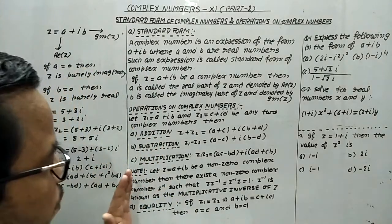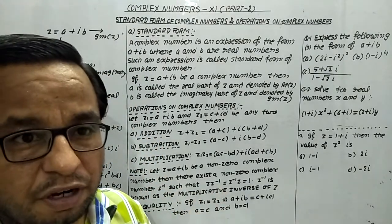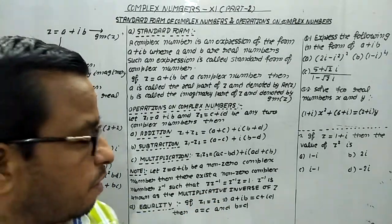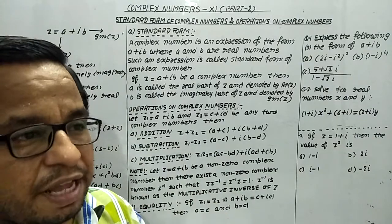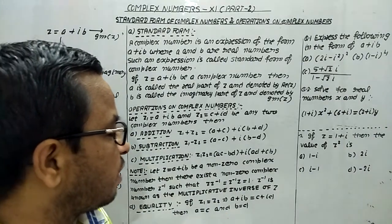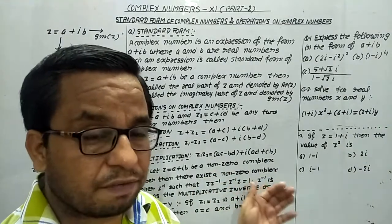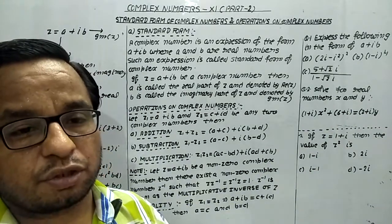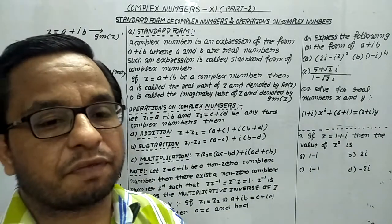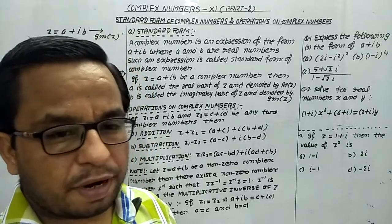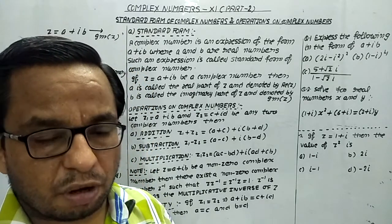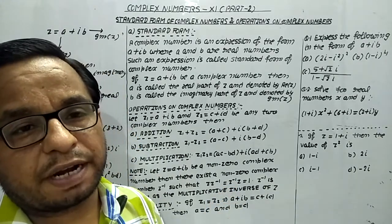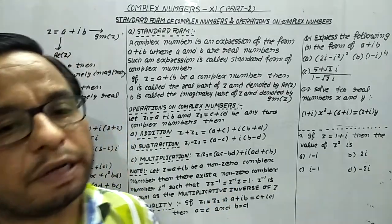Now this is a very important point. If we have a non-zero complex number z, then there exists a non-zero complex number z-inverse such that z times z-inverse equals z-inverse times z equals 1. This z-inverse is known as the multiplicative inverse. So whenever we have to find the multiplicative inverse of a non-zero complex number, we find 1 upon z.